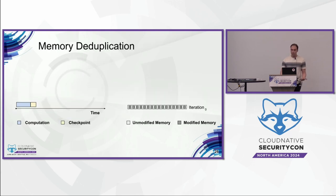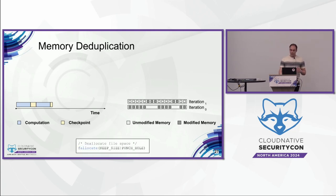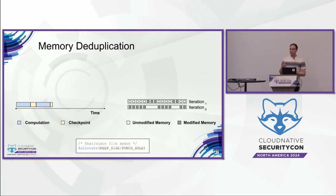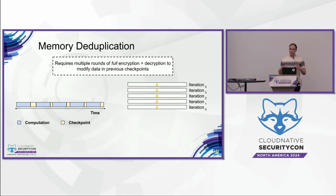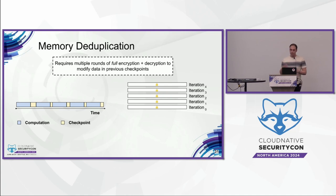Memory deduplication is another technique used with iterative checkpointing where memory pages in previous checkpoints can be deallocated using a system call called fallocate — essentially punching holes in the file or creating a sparse file — to reduce the size of the checkpoint. However, this is also challenging when encryption is used because we not only have to decrypt the data, but we also have to modify the previous checkpoint and encrypt it back, which increases the performance overhead.